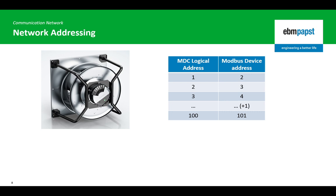This distinction is important for two reasons. Firstly, the MDC has been programmed to initialize the network with the first fan in the array being assigned Modbus device address 2. For every additional fan in the array, the Modbus device address increases by 1, up to 101 for the 100th fan in the array.